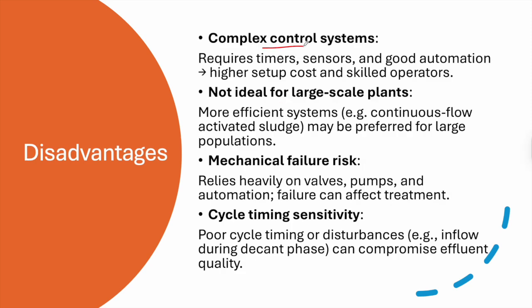The disadvantages include complex control systems requiring timers, sensors, and good automation, resulting in higher setup costs and the need for skilled operators — both high CAPEX and OPEX. It is not ideal for large-scale plants, which require more efficient systems. There is a mechanical failure risk since it relies heavily on valves, pumps, and automation, and failure can affect treatment. Finally, cycle timing sensitivity means poor cycle timing or disturbances can compromise effluent quality.